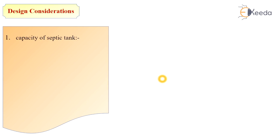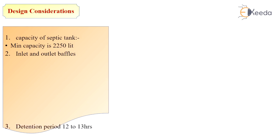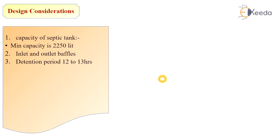So now we are going to see its design. For the design of septic tank, there are some design considerations. First is capacity of septic tank — the minimum capacity is assumed to be in the range of 2000 to 3000 liters. There are inlet and outlet baffles provided in the septic tank to reduce the velocity of flow and settlement of solid particles.